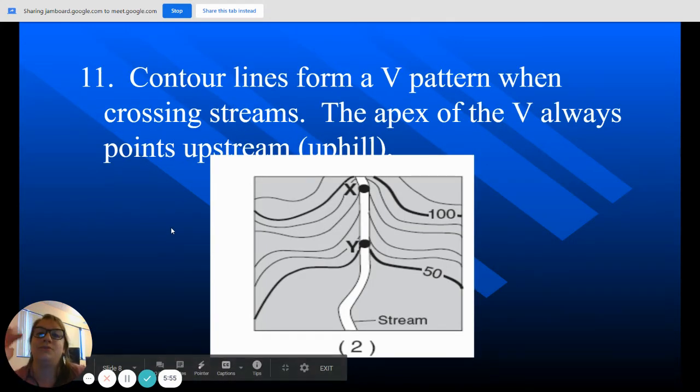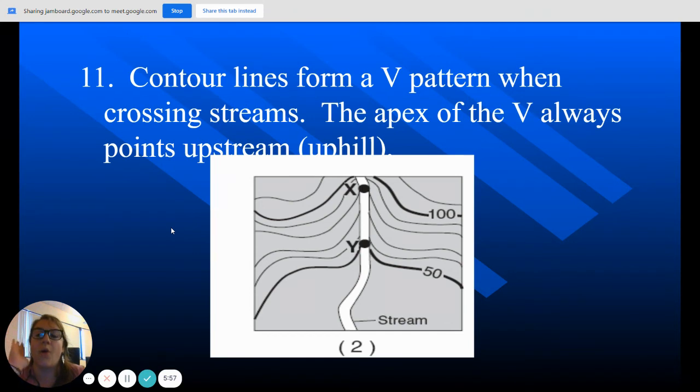Now this is a rule, and this is one that always shows up on the Regents exam, that contour lines form a V pattern when crossing streams. The apex, so the point of the V, always points upstream. So this right here, what I'm showing you with my hands, that's pointing in the north direction. That means the river is flowing towards the south. So if you look at this picture, this picture is the same way. Those Vs are pointing upstream. So that means that the water is flowing downwards this way from X to Y.